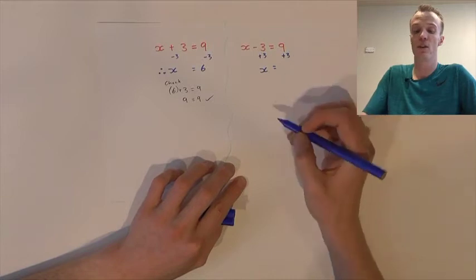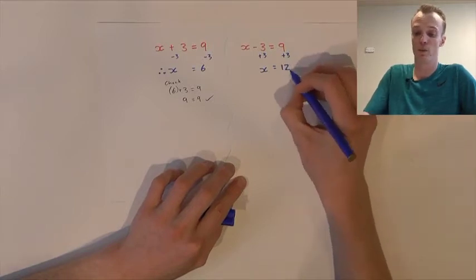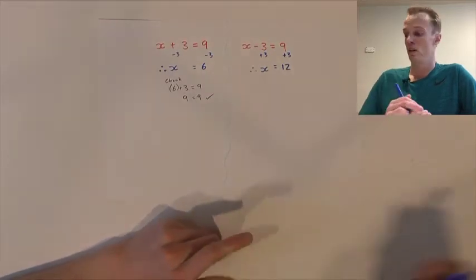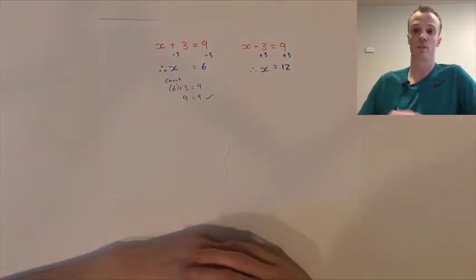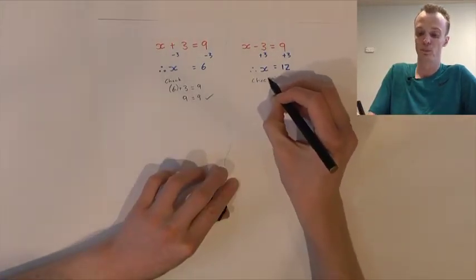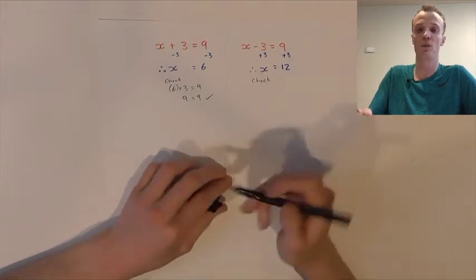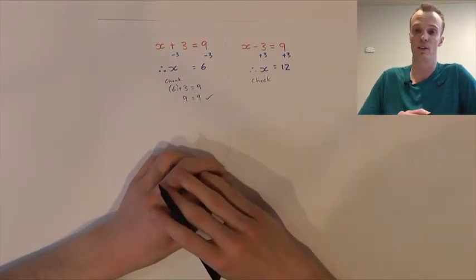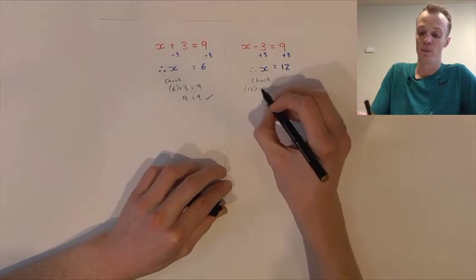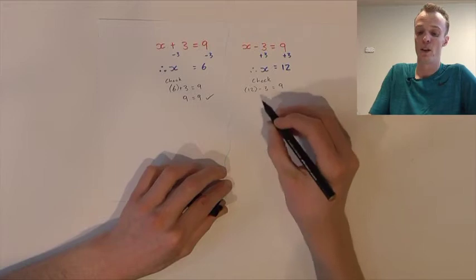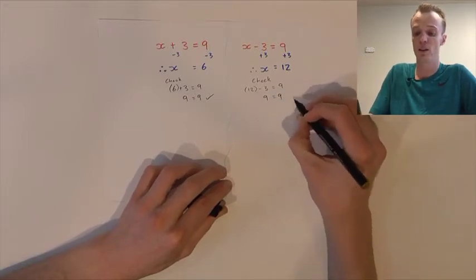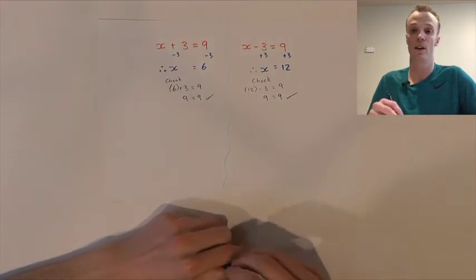So we've also got to add 3 to the right-hand side. On the left-hand side those two cancel, leaving our pronumeral x. On the right-hand side we've got 9 plus 3, which is 12. So we've found our answer to be 12. We can check through substitution — we take our value of 12 and substitute it wherever we see x. So 12 take 3 should equal 9. We do know that 12 take 3 is 9, so 9 does equal 9 — we've found the correct solution.